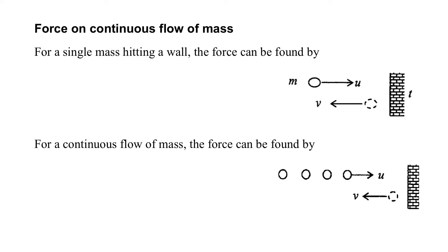Force on continuous flow of mass. So far, we usually consider just one object moving. For example, there is just one ball hitting on the wall and coming back. Then we can use F equals mv minus mu over t. And the t refers to the duration time of impact for the ball touching on the wall in this situation.